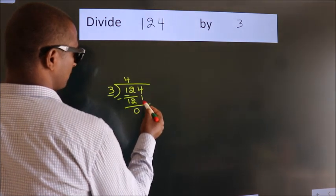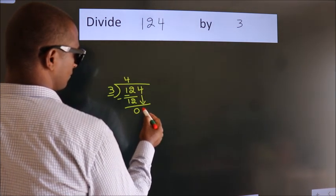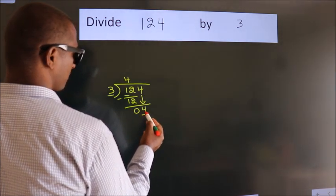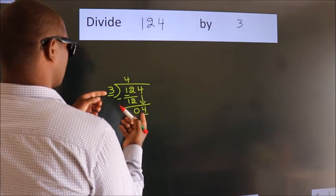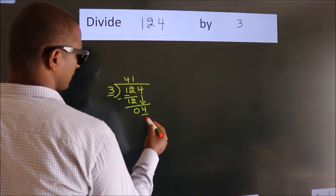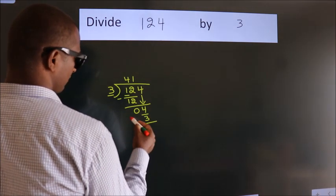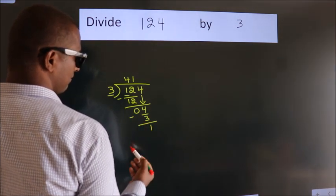After this, bring down the beside number. So 4 down. So 4. A number close to 4 in 3 table is 3 1s, 3. Now we subtract. We get 1.